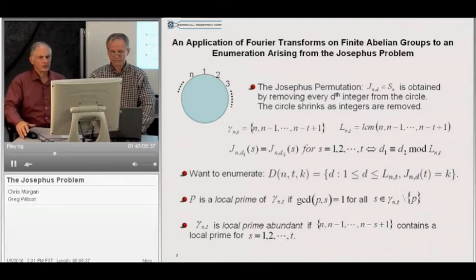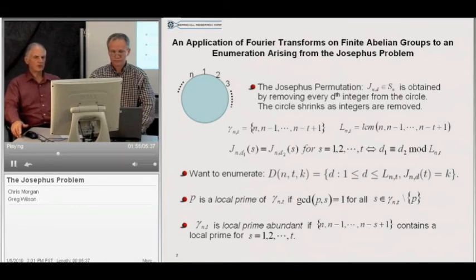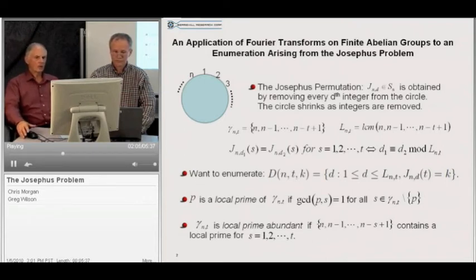It also facilitates the exposition to define the notion of a local prime. This is an element of gamma n t that's relatively prime to all other elements of gamma n t. Also, we say that gamma n t is locally prime abundant if gamma n s has a local prime for all s running from 1 to t.